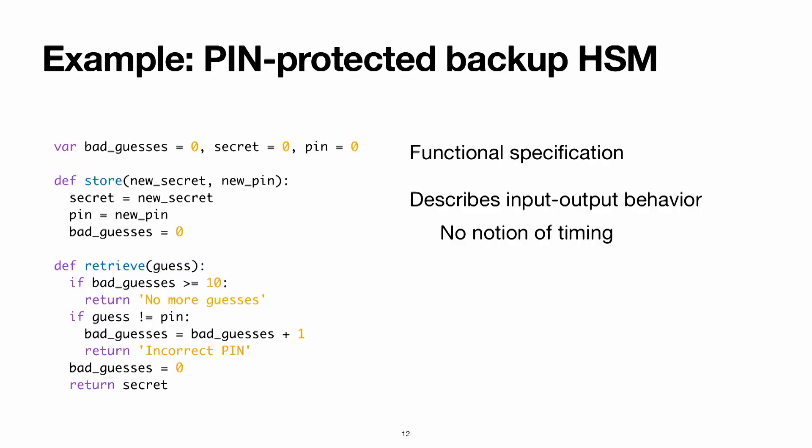As a running example, consider a pin-protected backup HSM — the core of your phone that unlocks if you enter the right pin code. It has a function to store a new secret with a pin code, and a way to retrieve your key out of the secure element if you supply the right pin guess. To provide strong security guarantees, you can only get ten guesses to try the pin. This spec is a fairly high-level functional description in Python pseudocode of just these two functions.